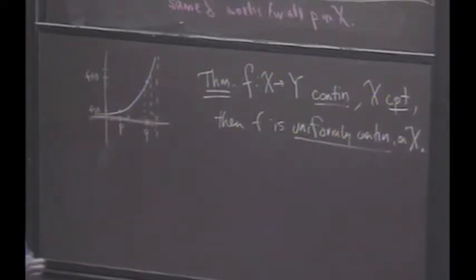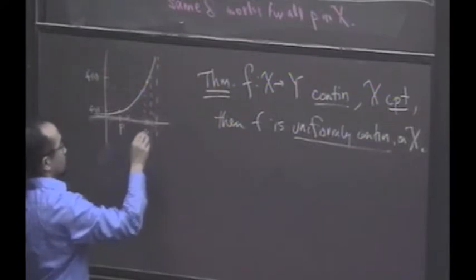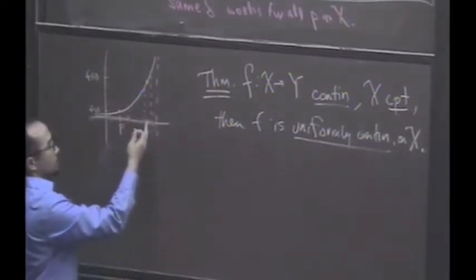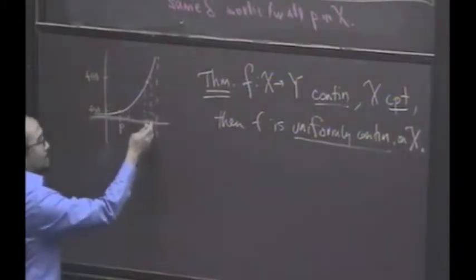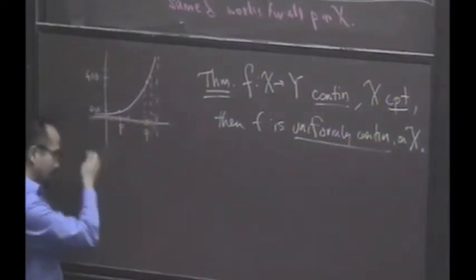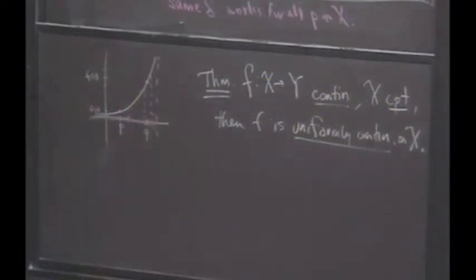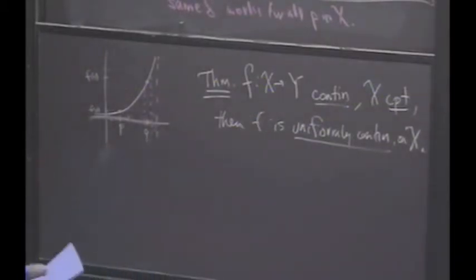If I'd stopped this domain right here, what delta would work for every point? The delta that worked at this endpoint, right? That would work everywhere to the left. So this sort of gives a hint as to what's going on with this theorem.